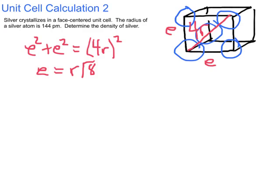So what can I do from here? Well, I was given the radius of the silver atom as being 144 picometers, so then my edge length will be 144 picometers times the square root of eight, and that's going to come out to be about 407 picometers.